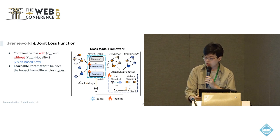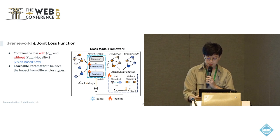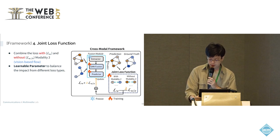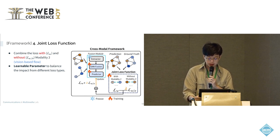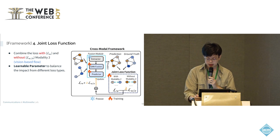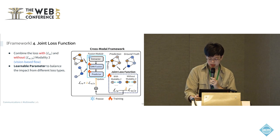We design a joint loss function. For areas with vision-based flow, we calculate the loss between the prediction and the vision-based flow. For areas without vision-based flow, we calculate the loss between the prediction and the telecom-based flow, denoted as L_w/o. We add a learnable parameter to modulate the impact of L_w/o, ensuring that our framework focuses more on the loss between the prediction and the vision-based flow.